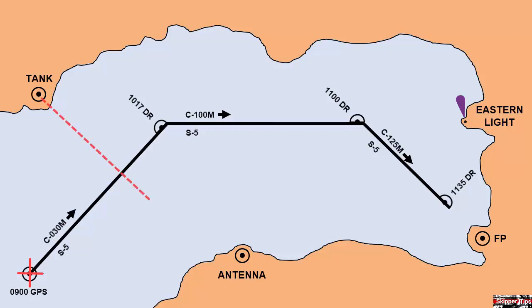Here you can see the tank is off our port beam on the first leg, and our antenna is off the starboard beam. We can shoot either one of these objects, and notice when we shoot the tank, how that line of position crosses the track line, and this shows our advance along our course.